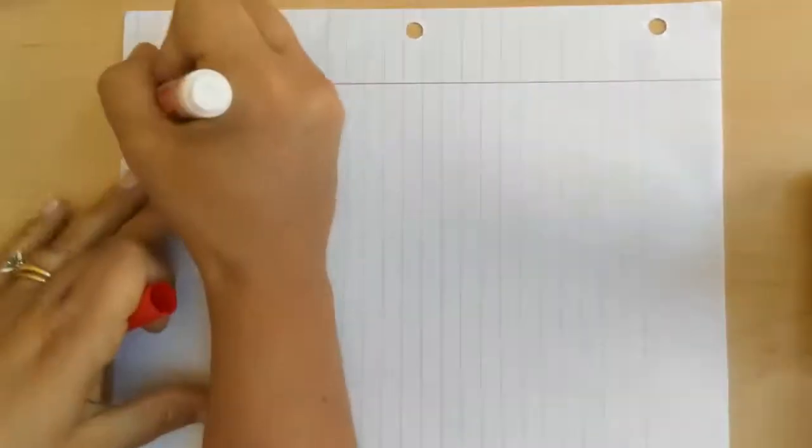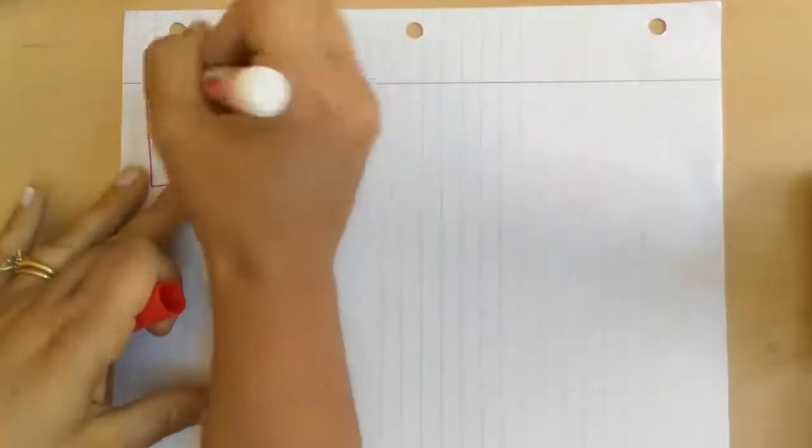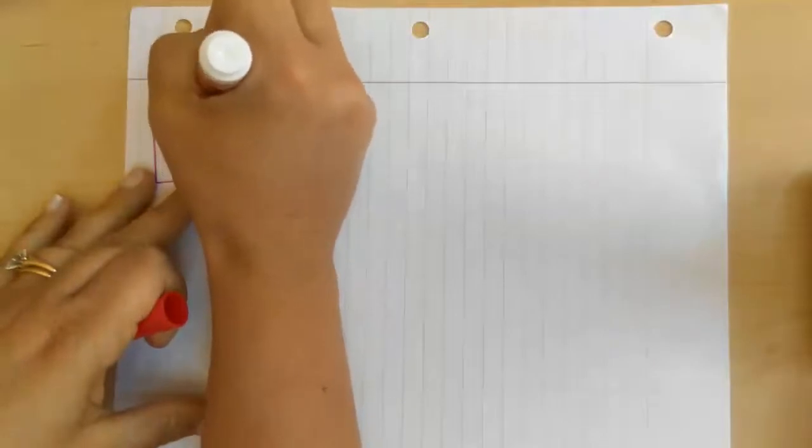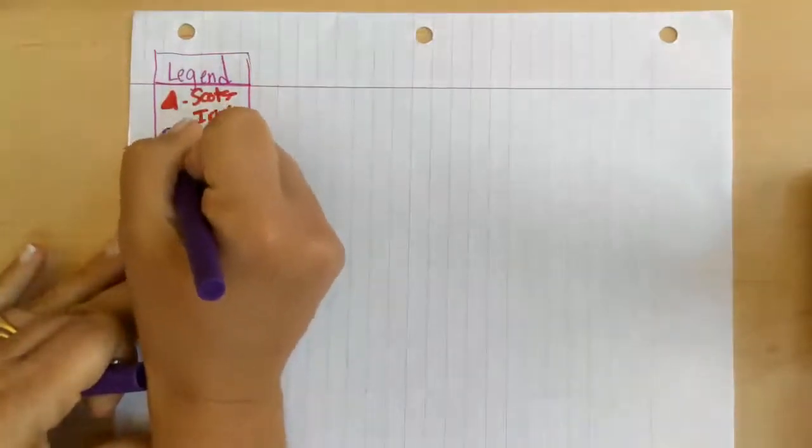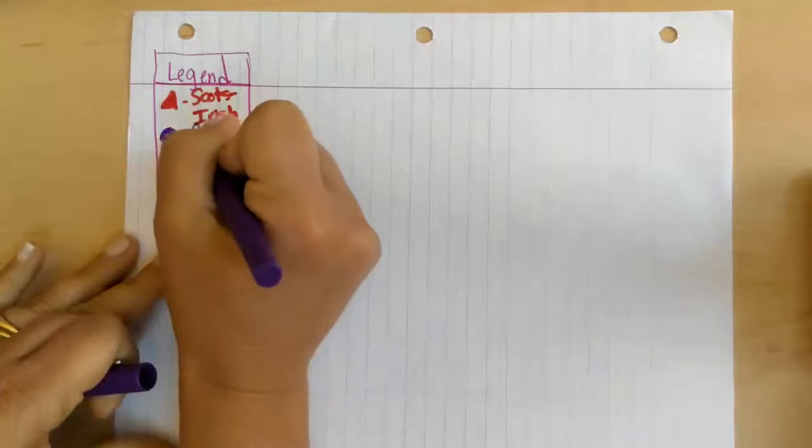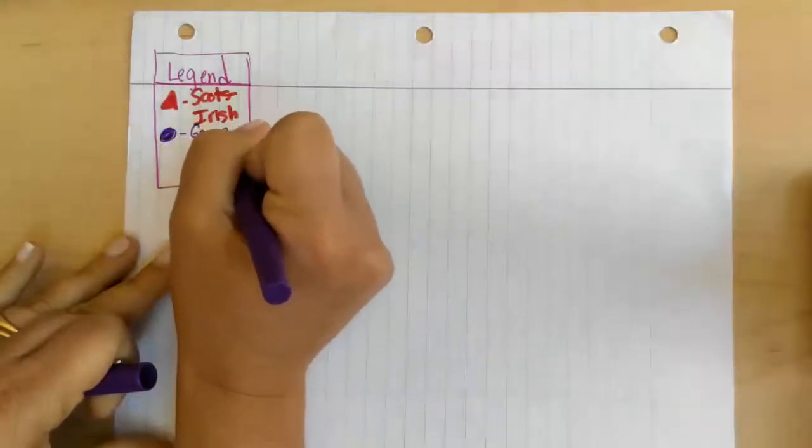Okay, and we're gonna go ahead and we're gonna make a red triangle that's going to represent our Scots-Irish. Okay, we are gonna make a purple circle for our German culture.